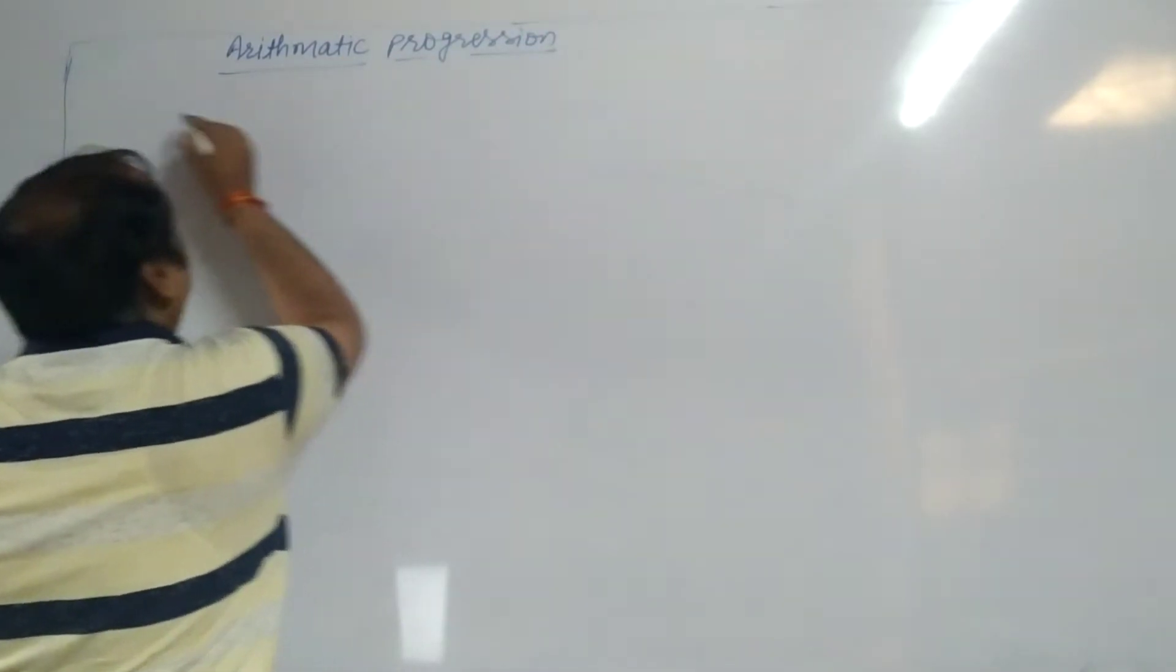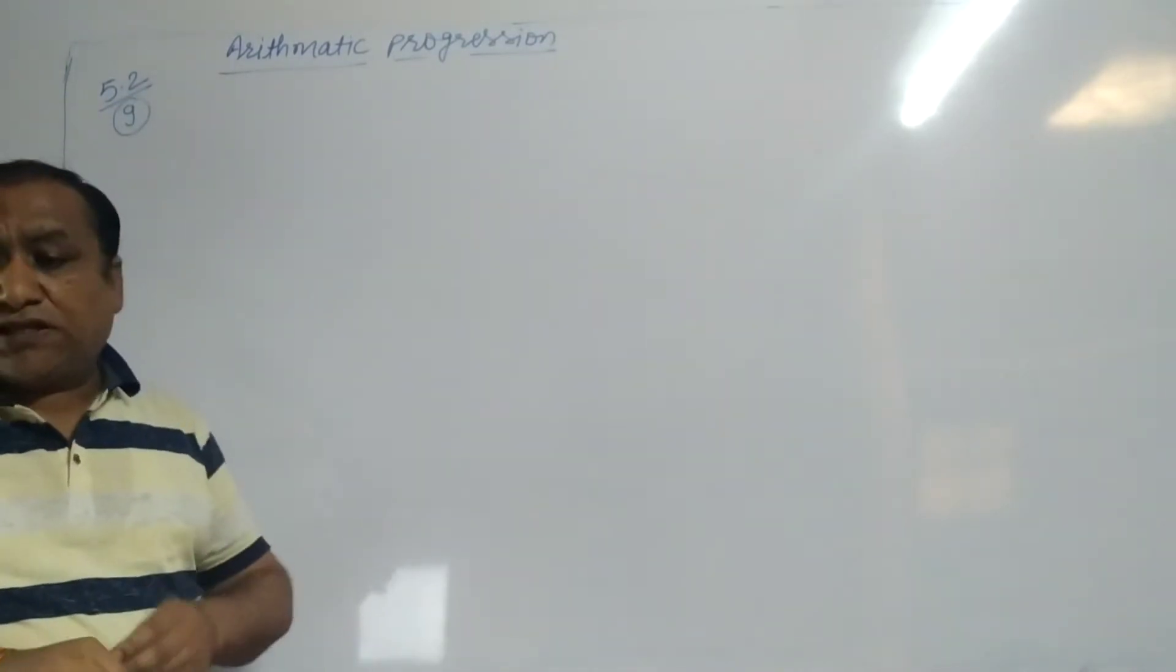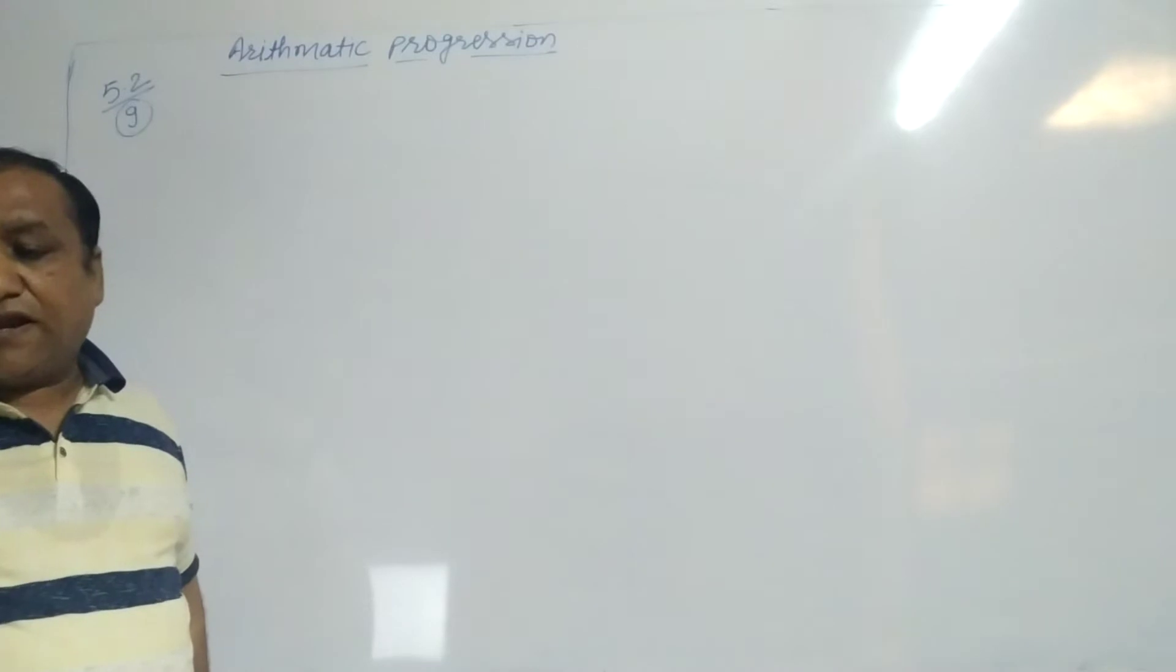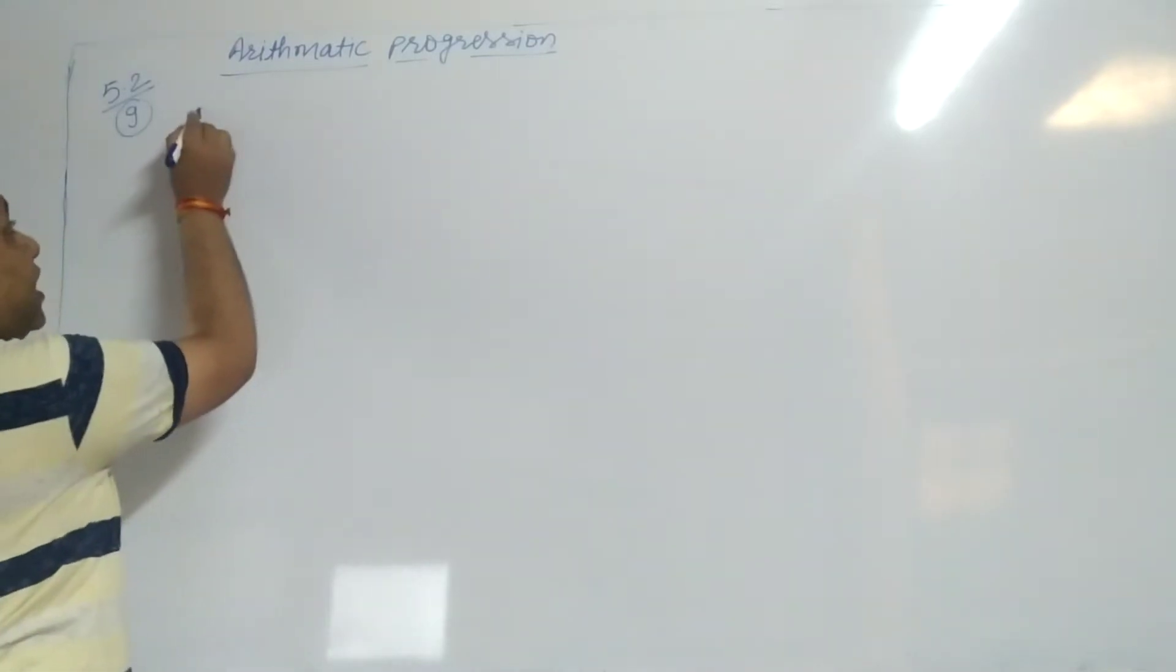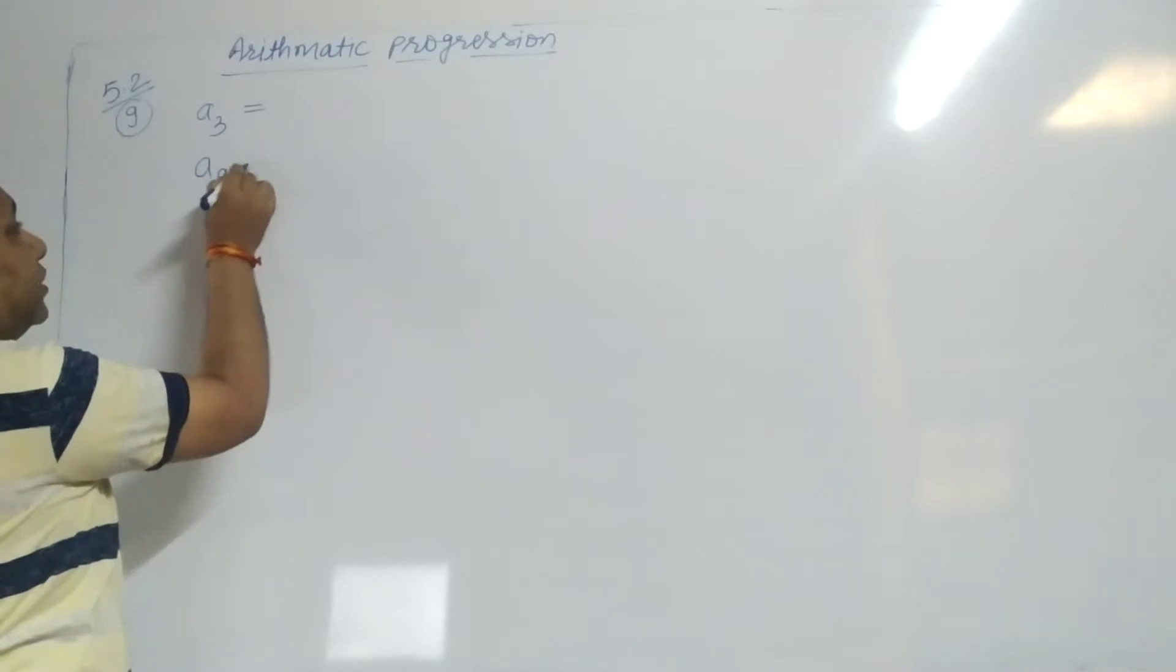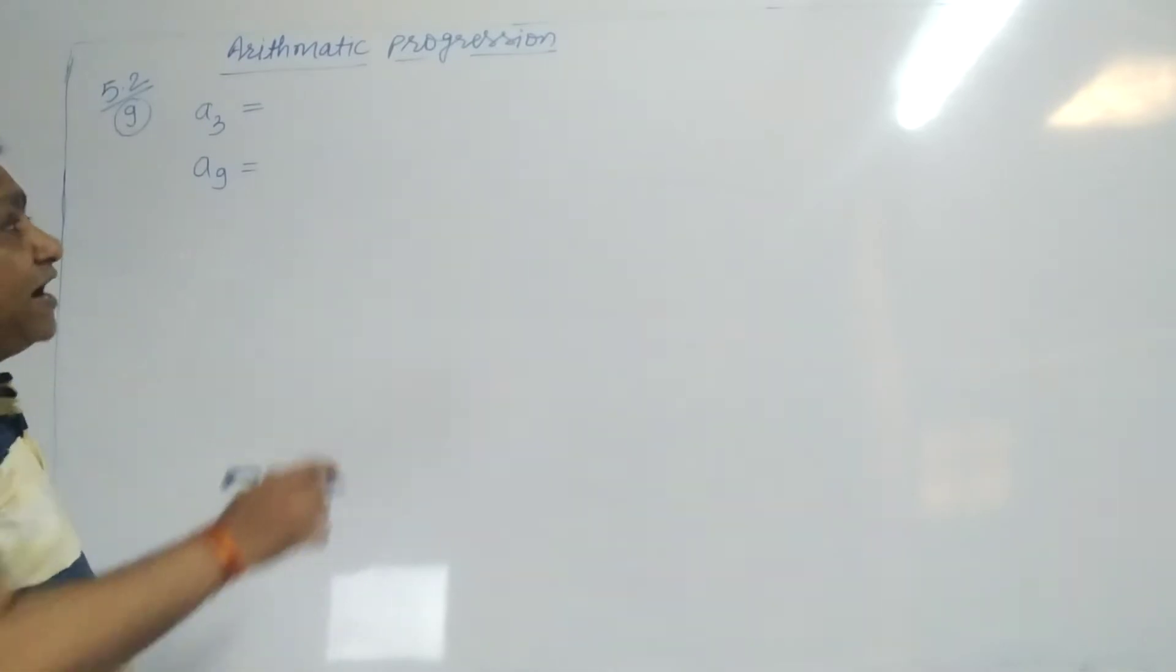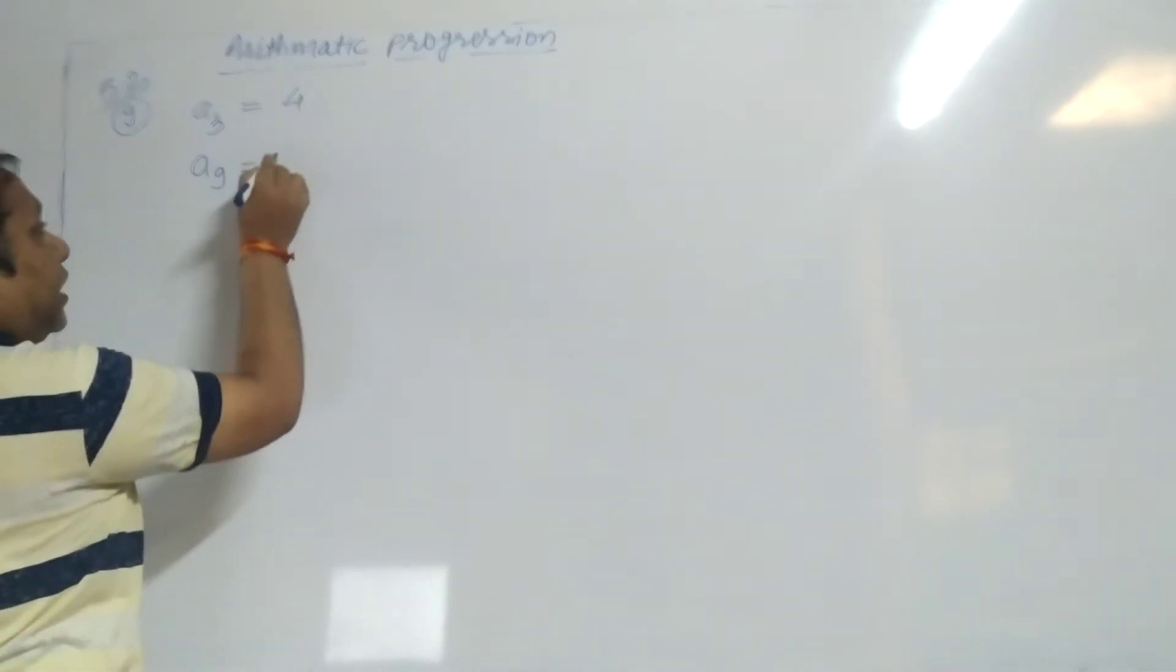Exercise 5.2, Question number 9. The information which is given to us: the third term and the ninth term of an AP. The third term is 4 and the ninth term is minus 8.